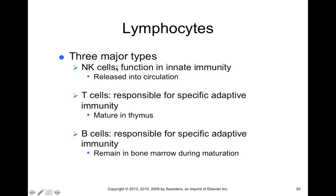Lymphocytes include natural killer cells, T cells, and B cells. Of these, T and B cells are involved with your specific or learned immune response, whereas natural killer cells are part of your innate immune response and can respond to many different antigens. Natural killer cells circulate in the blood and can migrate into infected tissue when necessary. T and B cells are lymphocytes that are part of specific adaptive immunity and play different roles.